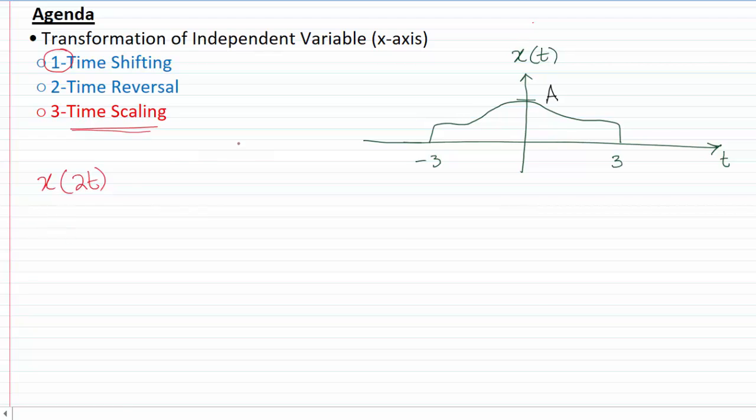I said that think of this signal that we have to plot as a new signal, and think of the signal that was already given to us as an old signal. So for the old signal, I'm going to put a subscript o with t, and for the new signal that I have to plot, I'm going to put a subscript n with t. So what I have got is I have to move from t old equals t new, which suggests that t new is nothing but t old by 2.